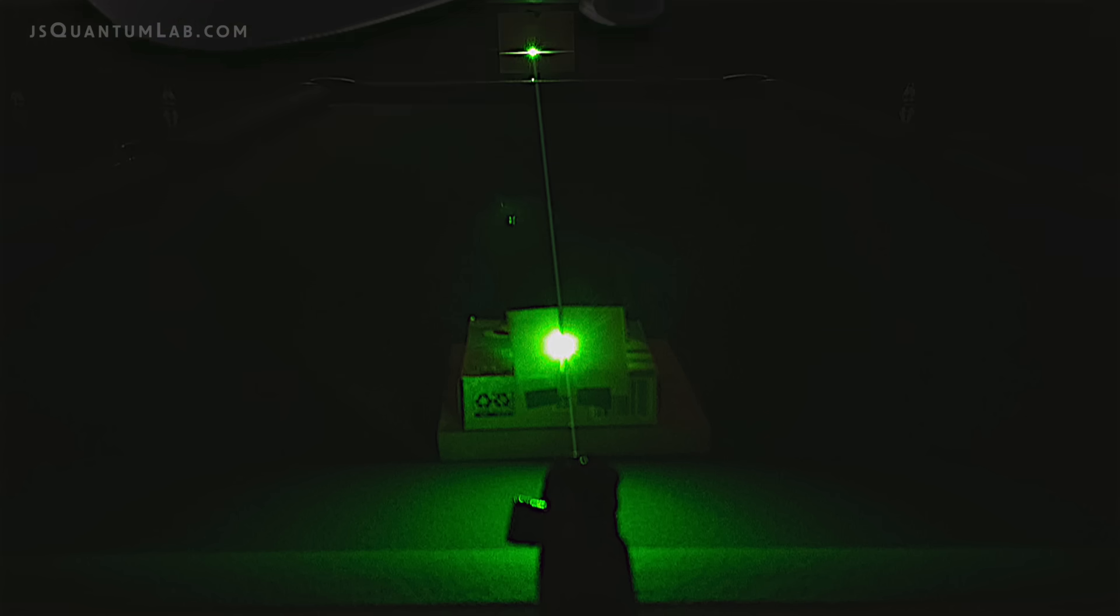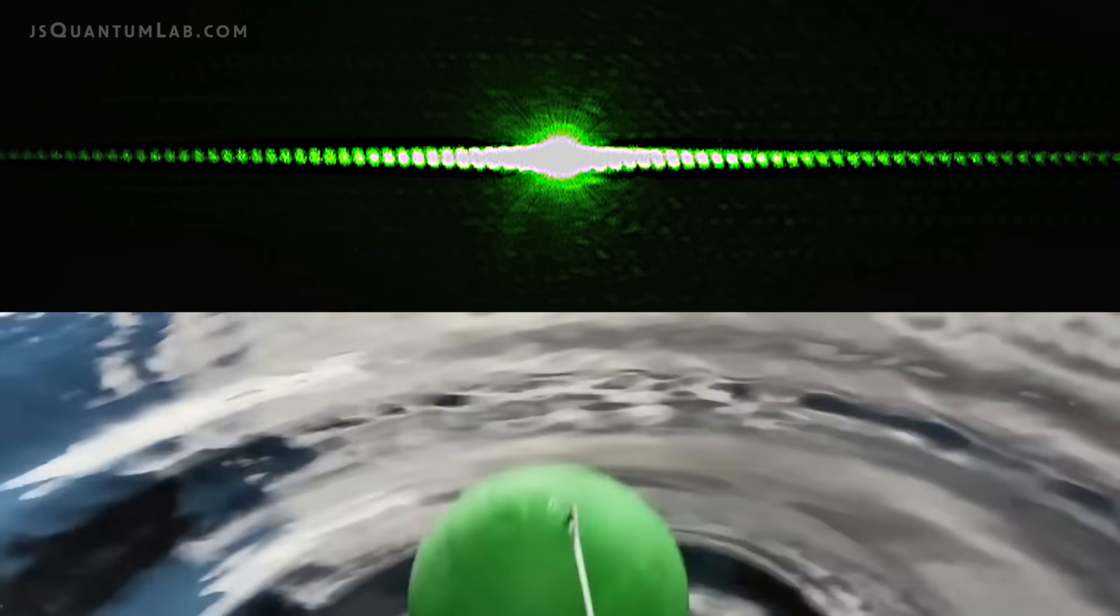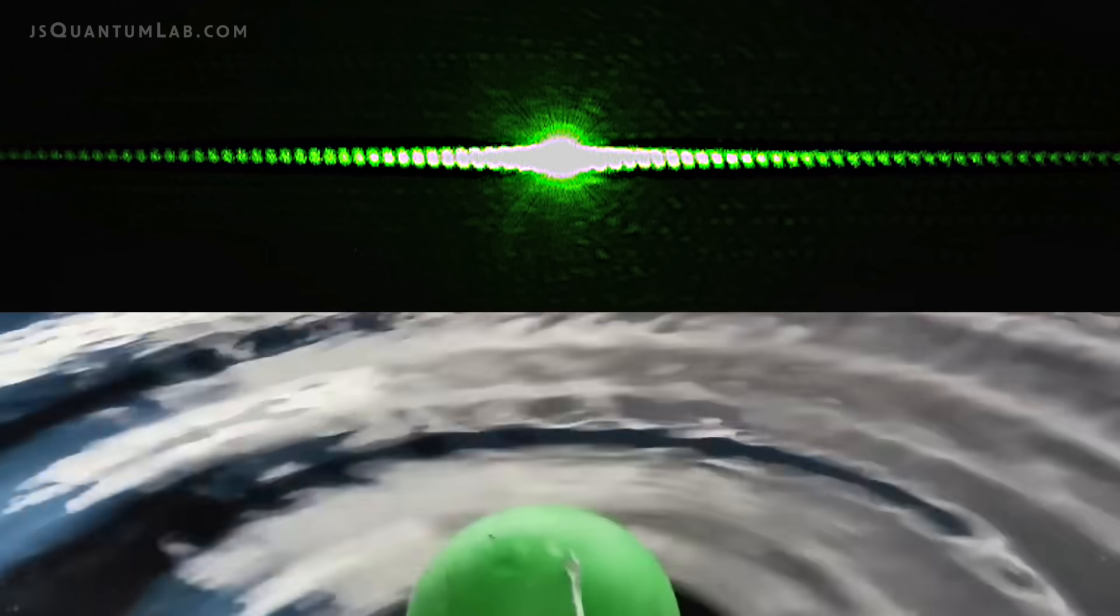Aim the laser at the center of the single slit and you will see a light dark pattern exactly like a double slit pattern. That's impossible! According to Veritasium's video, what you are looking at cannot happen with only one slit.